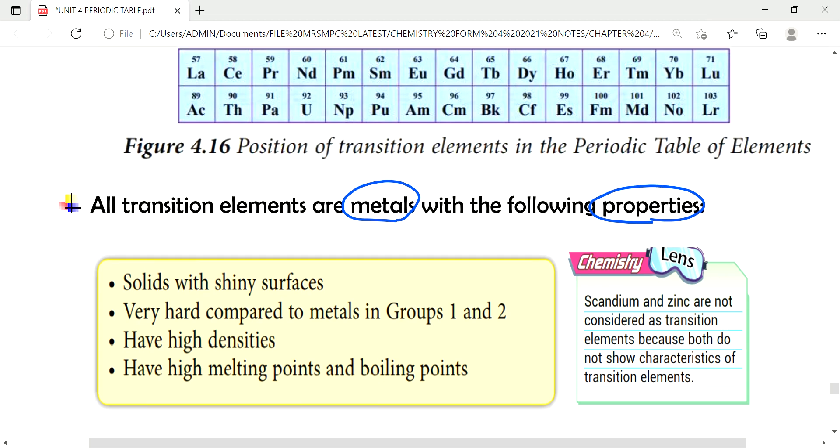First solid with shiny surfaces. Since the metal, they have shiny surfaces. Next, it's very hard compared to metals in group 1 and 2. Since transition elements are heavy metals, so they are very hard.